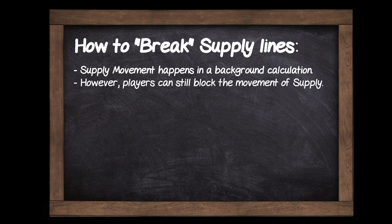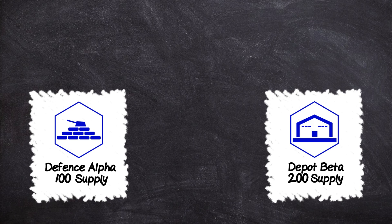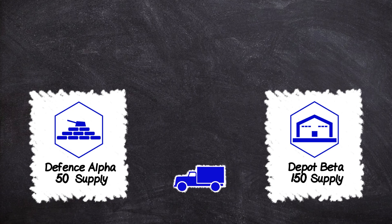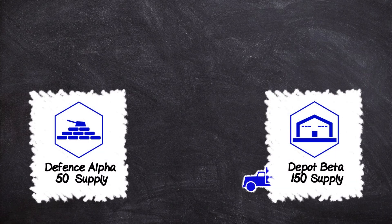That said, it is still possible to disrupt the movement of supply. In our previous example, Defence Alpha has been bombed from 100 to 50 supply and is now looking to get resupplied from Depot Beta. But now imagine another squadron of aircraft has also bombed Depot Beta, reducing its supply level from 200 to 150. This means it no longer has any spare supply to donate to Defence Alpha. The rule is: if an objective is reduced below 80% of its maximum supply, it is blocked from donating any supply to other objectives. So in the case of Depot Beta, 80% of 200 is 160, and it's been reduced to 150, so it can't donate supply to Defence Alpha.